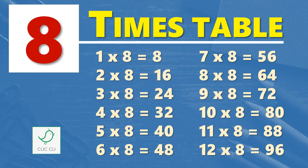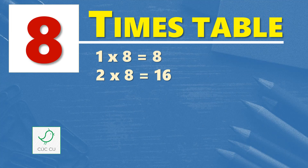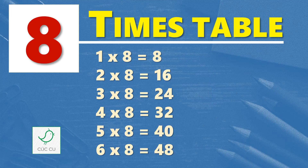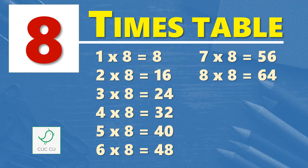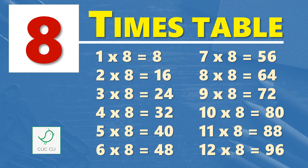Multiplication table of eight. Eight times table. One times eight is eight, two times eight is sixteen, three times eight is twenty-four, four times eight is thirty-two, five times eight is forty, six times eight is forty-eight, seven times eight is fifty-six, eight times eight is sixty-four, nine times eight is seventy-two, ten times eight is eighty, eleven times eight is eighty-eight, twelve times eight is ninety-six.